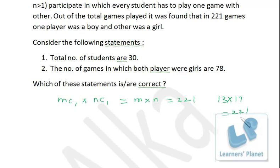Now, 13 into 17 is 221. Out of them, which one is M and which one is N? We do not get any other combination from where we get multiplication as 221. Since 13 and 17, both of them are prime numbers, you cannot get any other factors of 221.